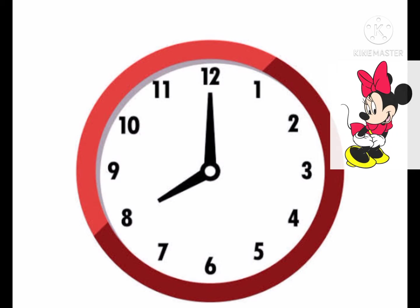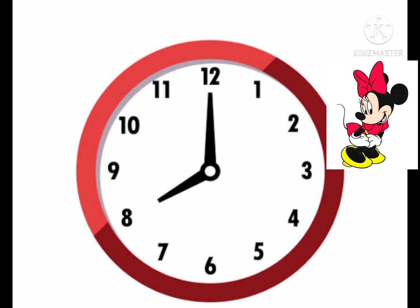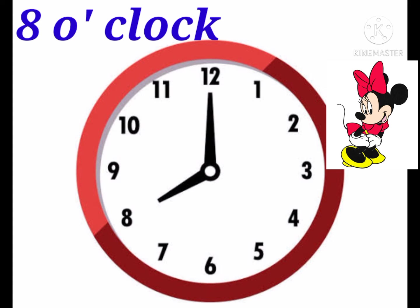In this clock, the hour hand shows number 8, so 8 hours. And the minute hand shows number 12 — 12 means 60 minutes. So when it is 60 minutes you read it as 8 o'clock. Exactly, it is 8 o'clock.